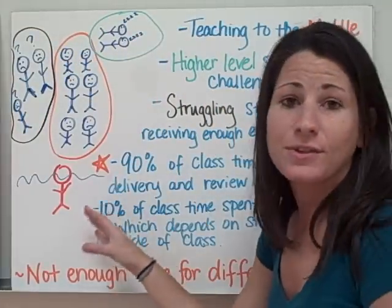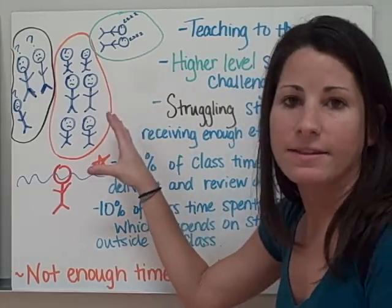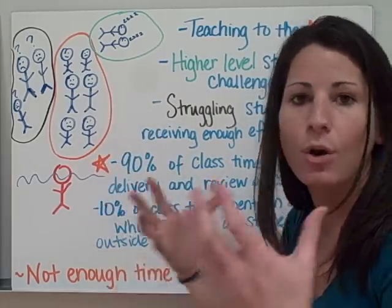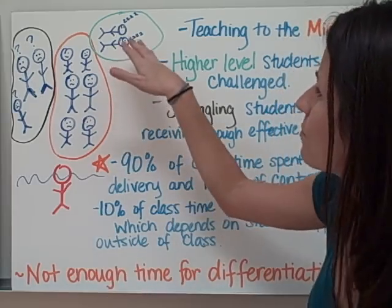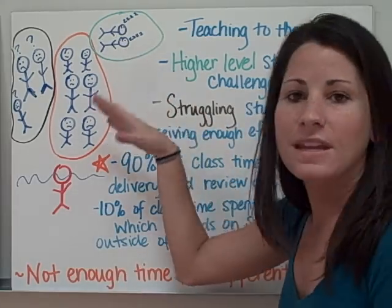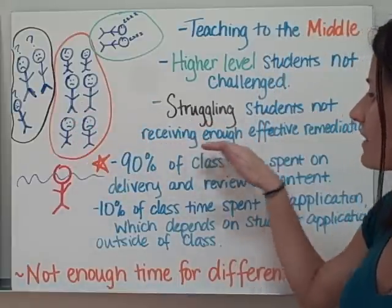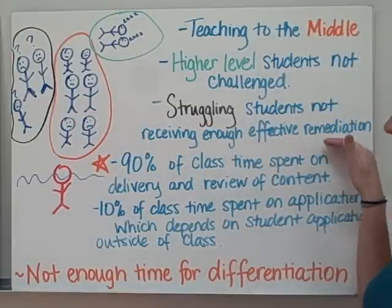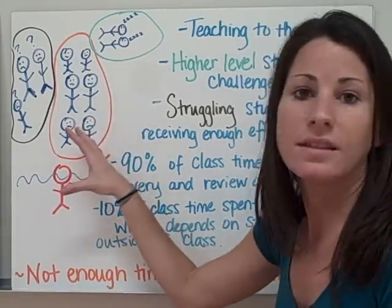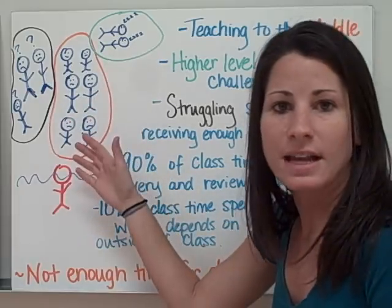This is what my classroom used to look like. I was teaching to the middle group of the class — the students that could follow along with what we were doing — while I had a group of higher-level students, not challenged, bored with the information, ready to move forward. And I had a struggling group of students that were not receiving enough effective remediation. They didn't have the basic content they needed, or they needed more help in order to be successful.